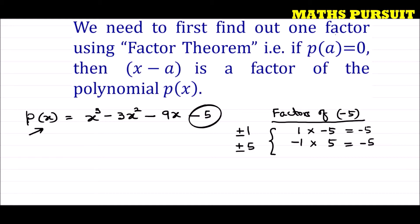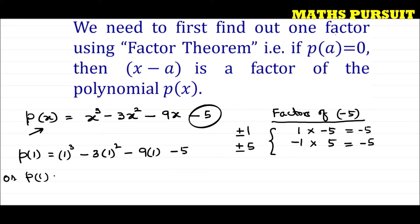Let me first try with p(1) — replacing x with 1: 1 to the power 3 minus 3 into 1 to the power 2 minus 9 into 1 minus 5. That equals 1 minus 3 minus 9 minus 5, which gives 1 minus 17, equal to minus 16. So p(1) is not zero.